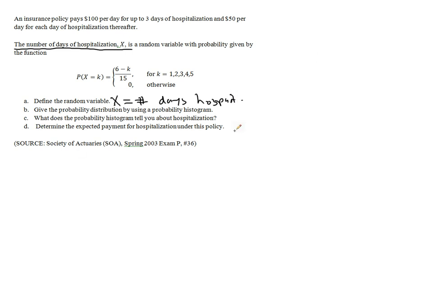We want the probability distribution by using a probability histogram. Well, first we would need to know what the probability of each one of the possible values for the number of days of hospitalization is. So X can possibly take on, well, really in this case, based on the way this is defined...